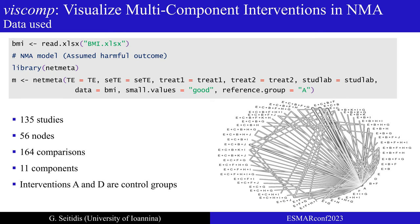To demonstrate the usage of the package functions, we will use as an example a network that evaluates self-management interventions on reducing the body mass index. Interventions are masked as this result will be submitted soon to a medical journal and cannot be revealed beforehand. The network includes in total 135 studies, 56 nodes, and 11 components. As you can see from the network plot, most comparisons involve node A, which is the control group and will be used as the reference in the network meta-analysis model. The network has many nodes and many comparisons, but few head-to-head studies, so the assumptions of network meta-analysis and component network meta-analysis will be challenged due to sparsity.